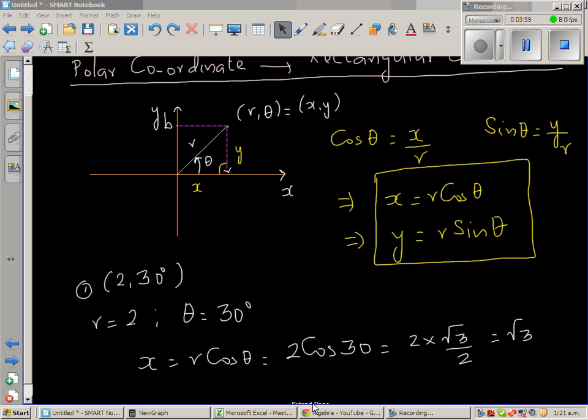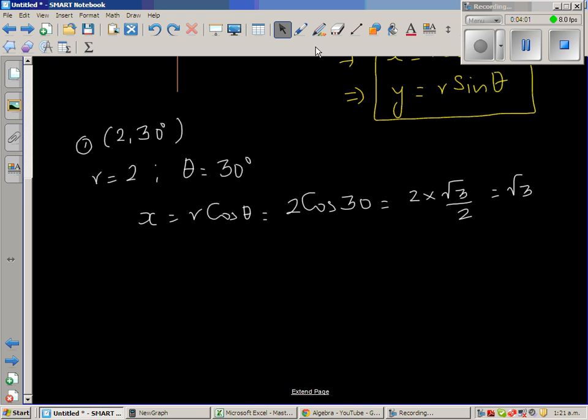Cos 30° is √3 over 2, so which is √3. And √3 is 1.7 something. We'll check that on a calculator later. And y is r sin θ, which is 2 sin 30°. And sin 30° is half, so which is 2 times half, which is 1. So this is same as saying (√3, 1).